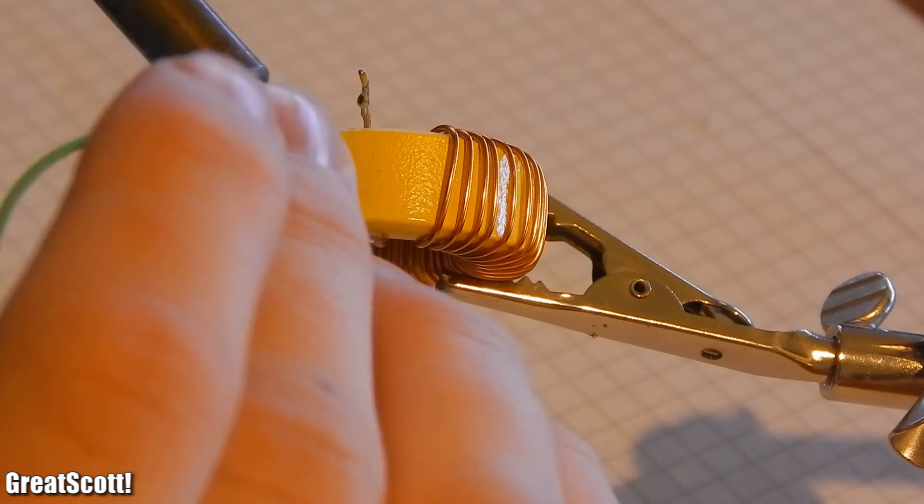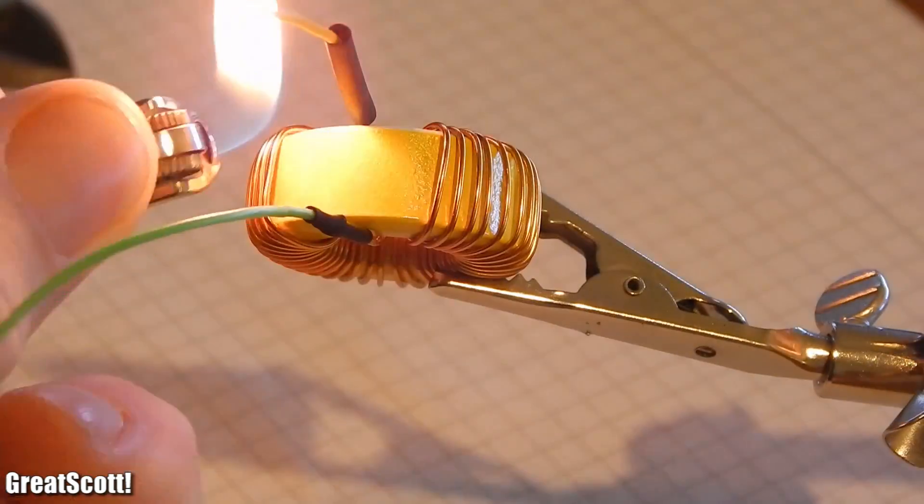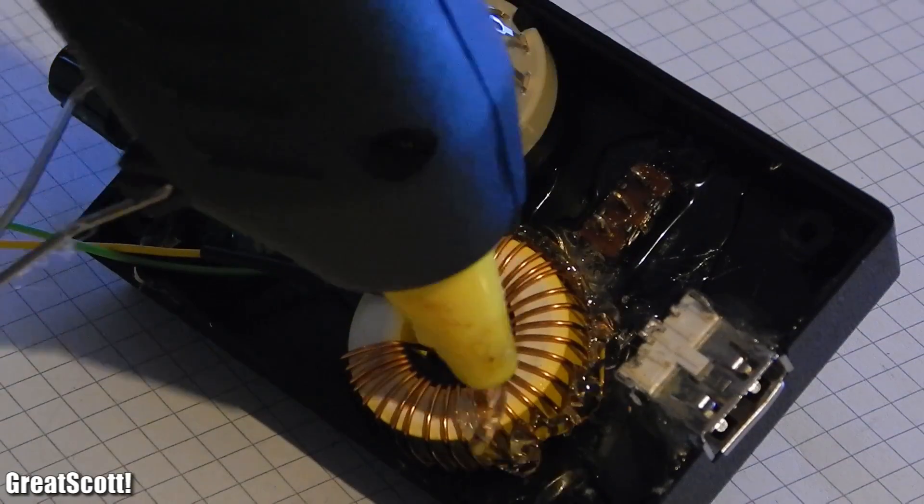The coil is so big, it won't fit on the PCB. So I soldered two wires to its leads and used drinking tube to protect the connections. Afterwards it got glued in the case.